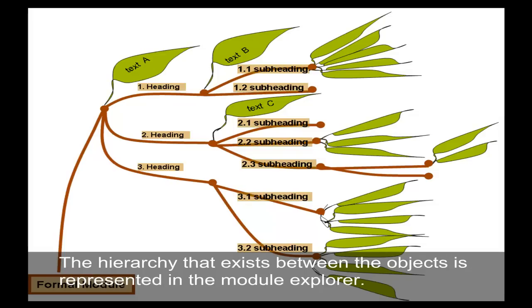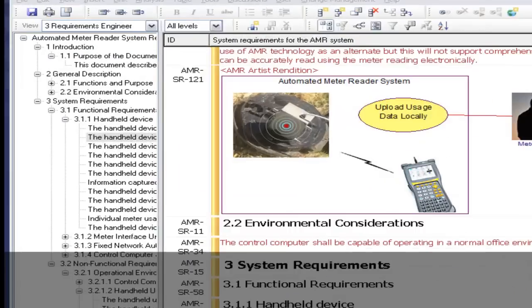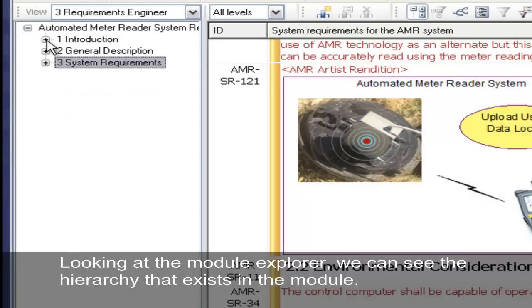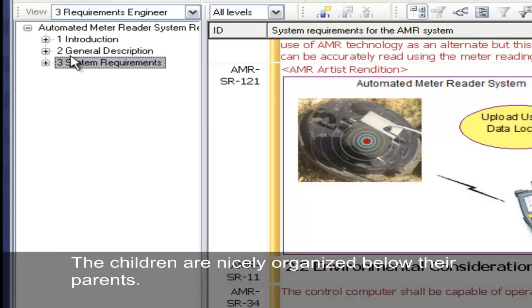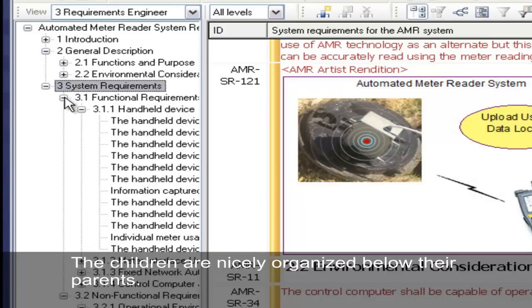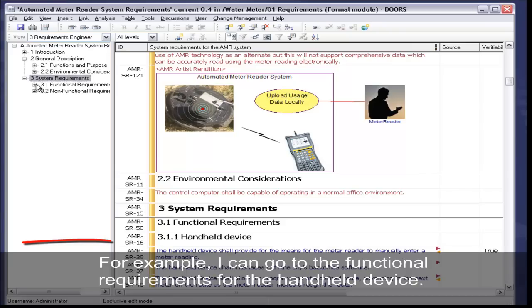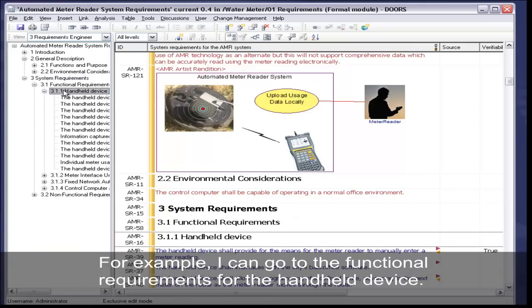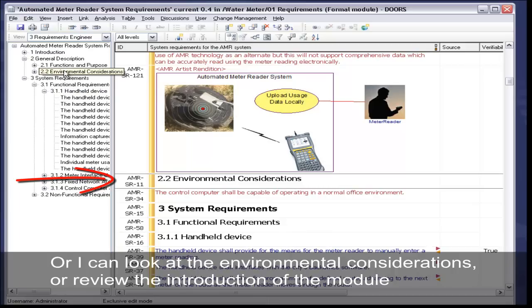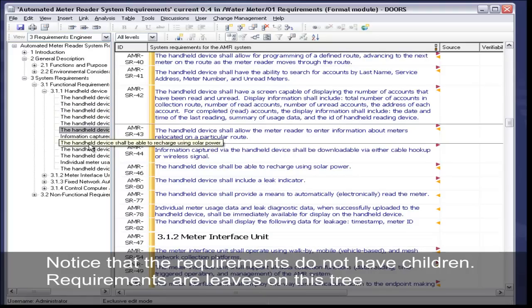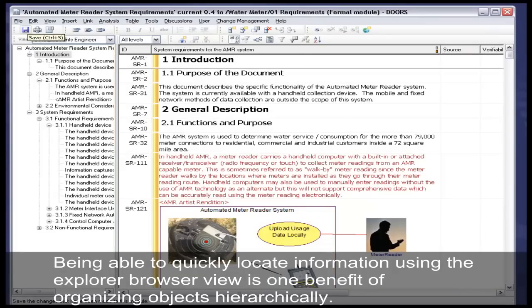The hierarchy that exists between the objects is represented in the Module Explorer. Looking at the Module Explorer, we see the hierarchy that exists in the Module. The children are nicely organized below their parent. Notice that the Explorer can be used to go directly to a specific item. For example, I can go to the Functional Requirements for the Handheld Device, or I can look at the Environmental Considerations, or review the Introduction of the Module. Notice that the requirements do not have children. Requirements are leaves on this tree. Being able to quickly locate information using the Explorer Browser View is one benefit of organizing objects hierarchically.